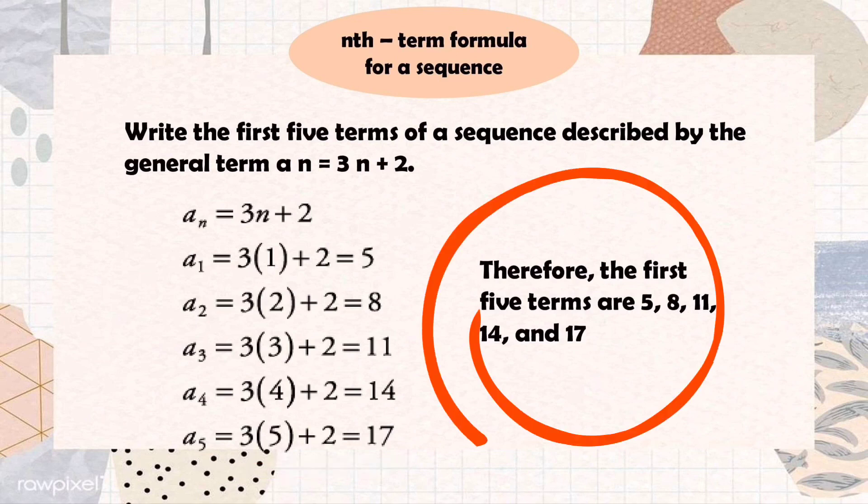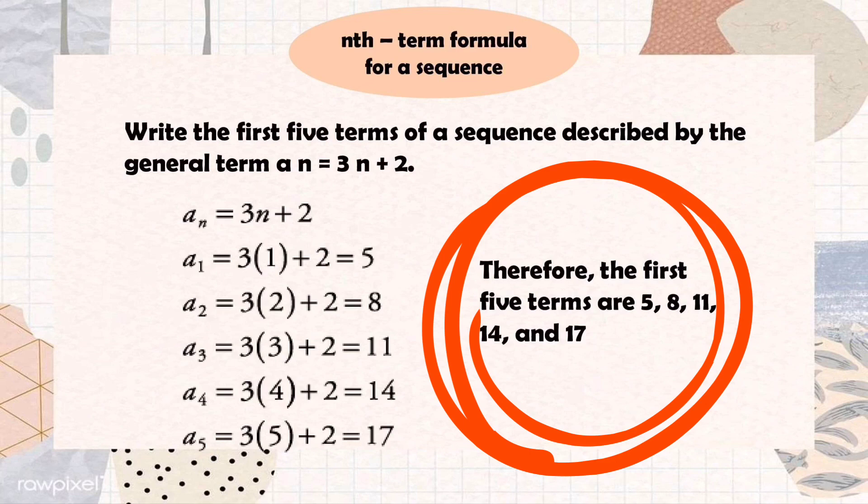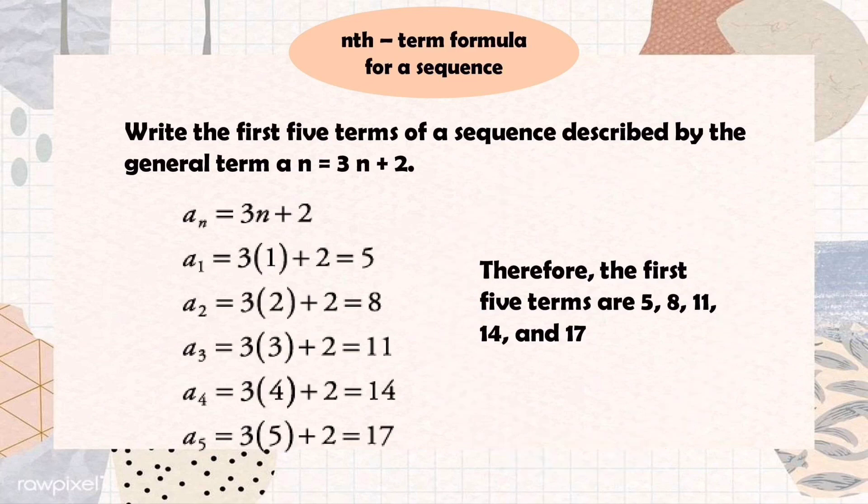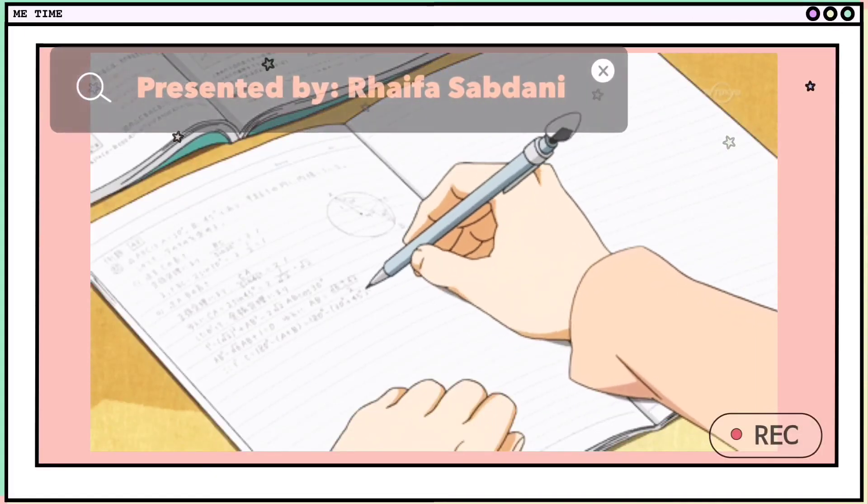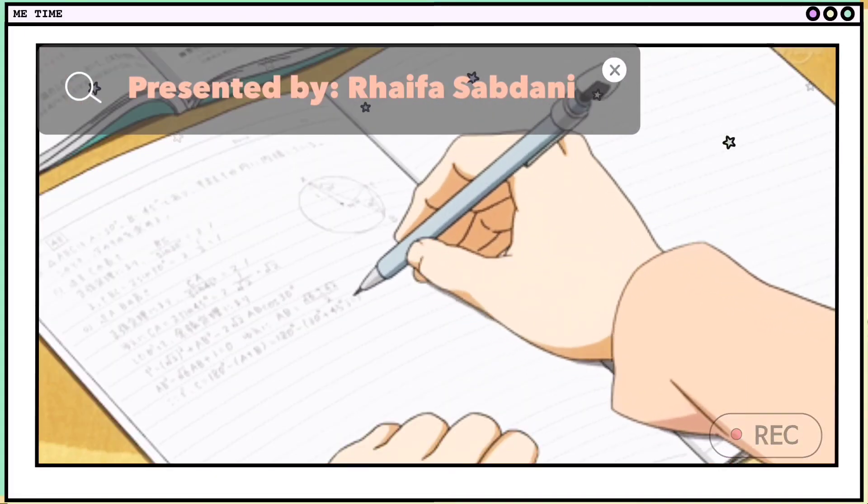Therefore, the first five terms are 5, 8, 11, 14, and 17. Okay, that's all. Thank you for watching. Hope you learned something.